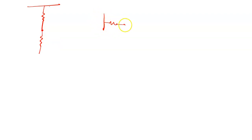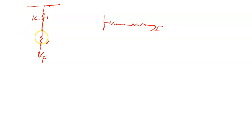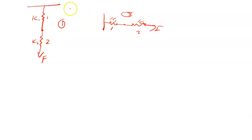Springs connected in series look like this when arranged vertically, and like this when arranged horizontally. If this is spring 1 and spring 2, this spring has a spring constant of k1 and the other has k2. The same applies to the horizontal arrangement. The concepts for the vertical arrangement are applicable to the horizontal one, because both are series connections.